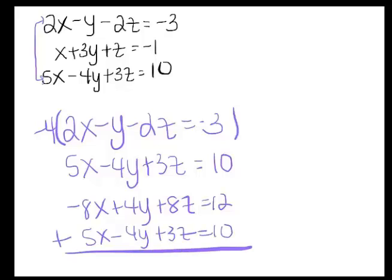Okay, so now when I add these together, the y's will cancel again. Okay, so I'm left with negative 3x plus 11z equals 22.